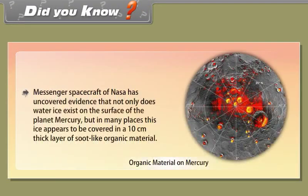Did you know? NASA's Messenger spacecraft has uncovered evidence that not only does water ice exist on the surface of the planet Mercury, but in many places this ice appears to be covered in a 10 cm thick layer of soot-like organic material.